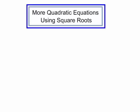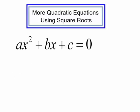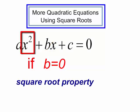We are going to continue talking about solving quadratic equations using square roots. This is the general form of a quadratic equation: ax squared plus bx plus c equals 0. But when b equals 0, I do not have a variable to the first. In this case, I can isolate my squared term and use the square root property, or take the square root of both sides.